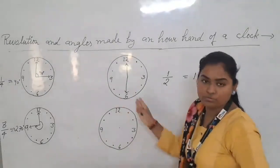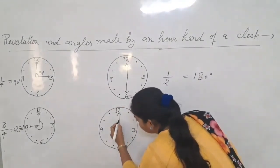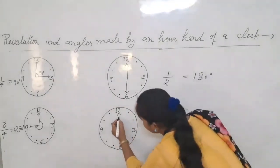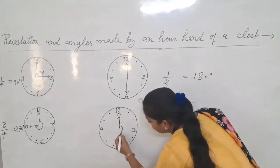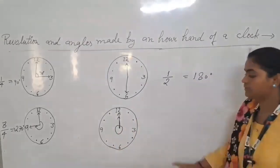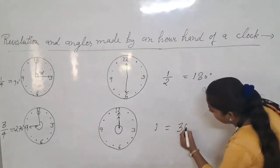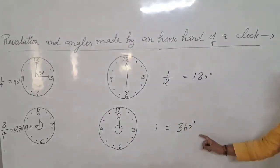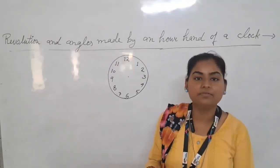Complete revolution means the hand on the dial completes a full circle. Complete revolution equals 360 degrees. We take one example for this.